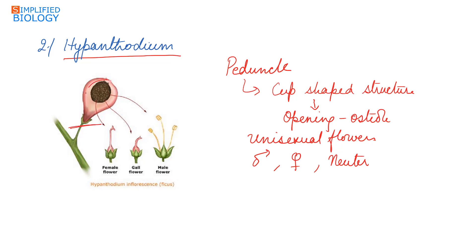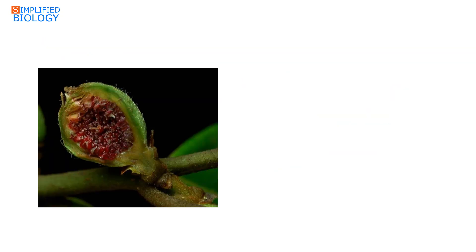In this hypanthodium inflorescence, the peduncle forms a cup-shaped structure. At the base of the inside of this cup develop the female flowers, at the upper part develop the male flowers, and in between the male and female flowers develop the neuter flowers.